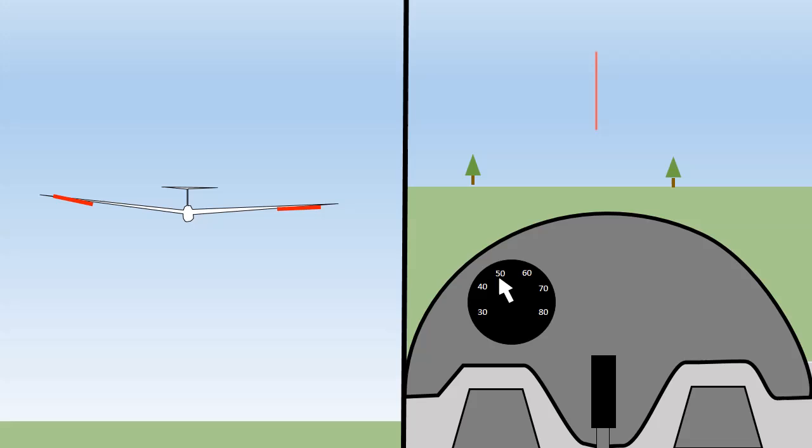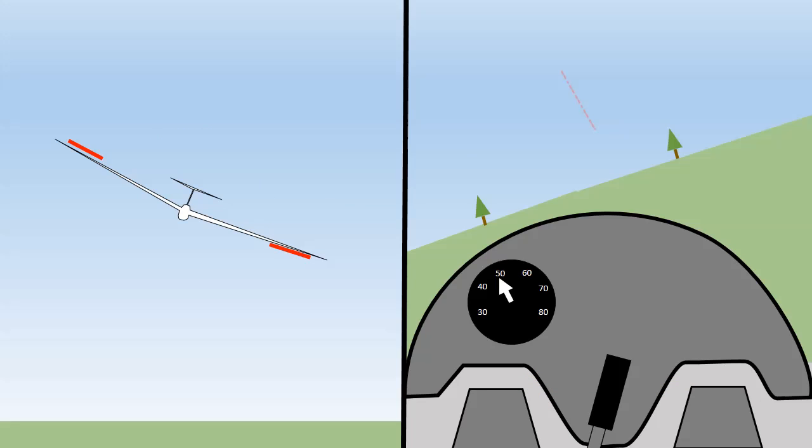Now let's look at the ailerons. These are controlled by moving the stick side to side and cause the glider to roll, which is a rotation in this direction. If you move the stick to the right the glider will roll to the right and will continue to roll to the right until you centralise the stick. So the stick controls not the angle of bank but the rate of roll — the further you move the stick to the right the faster it will roll to the right.